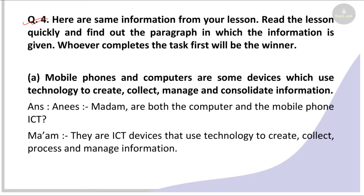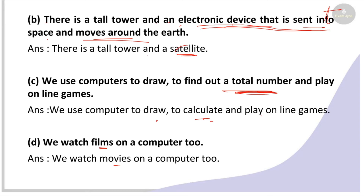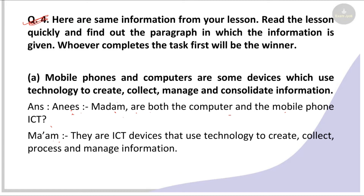Next, question three: here is some information from your lesson. Read the lesson quickly and find out the paragraph in which the information is given. The sentence given is: mobile phones and computers are devices which can use technology to create, collect, manage, and consolidate information. This is found in paragraph number two.